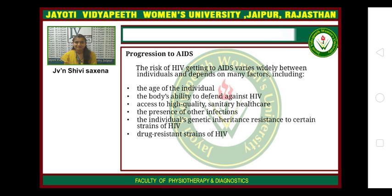Taking effective antiretroviral medications long-term can halt ongoing damage from the virus. Late stage HIV infection: without medication, HIV weakens the body's power to fight infection and the person becomes susceptible to serious illness. This stage is known as AIDS or stage 3 HIV. Symptoms of late-stage HIV infection may include diarrhea — typically persistent or chronic — dry cough, fever of over 100 degrees Fahrenheit lasting for weeks, night sweats, permanent tiredness, shortness of breath, swollen glands lasting for weeks, unintentional weight loss, and white spots on the tongue or mouth.